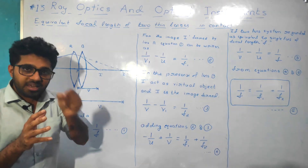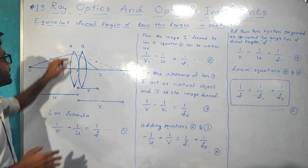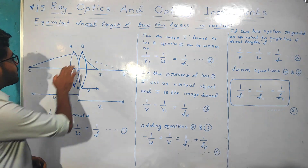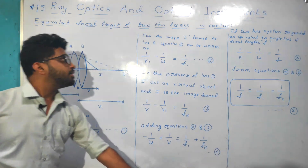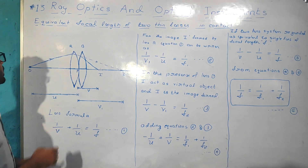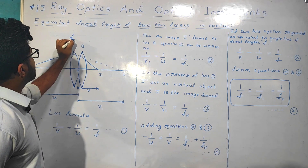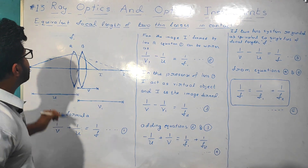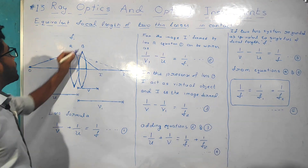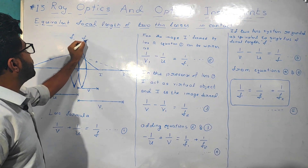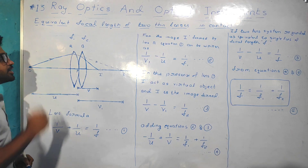We label the two lenses as Lens A and Lens B. Let F1 be the focal length of Lens A and F2 be the focal length of Lens B.